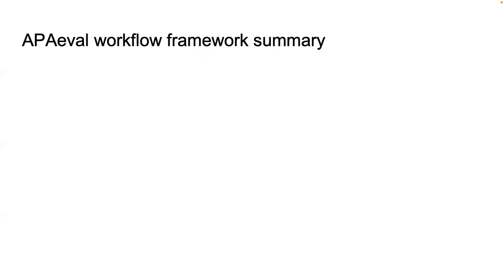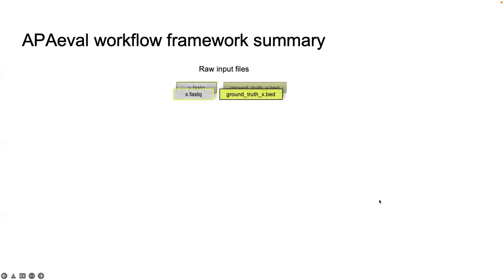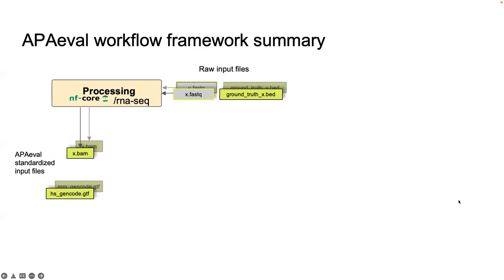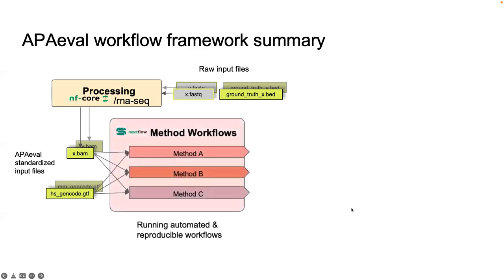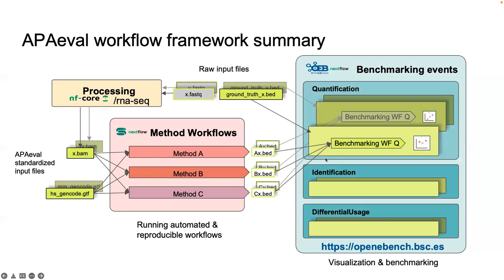Putting all the different sections together, we came up with the APAVal workflow framework. Our framework starts off with BED and FASTQ raw input files that are processed to generate BAM files. The BAM files and GTF annotation file are APAVal standardized inputs — a fixed file format for all tools — which are fed through the automated method workflow for each tool. The output format for all workflows is a BED file that, together with a ground truth raw input file, is fed to the benchmarking events. Multiple metrics are used to evaluate each tool, and the tools are then benchmarked and visualized on OpenEBench.